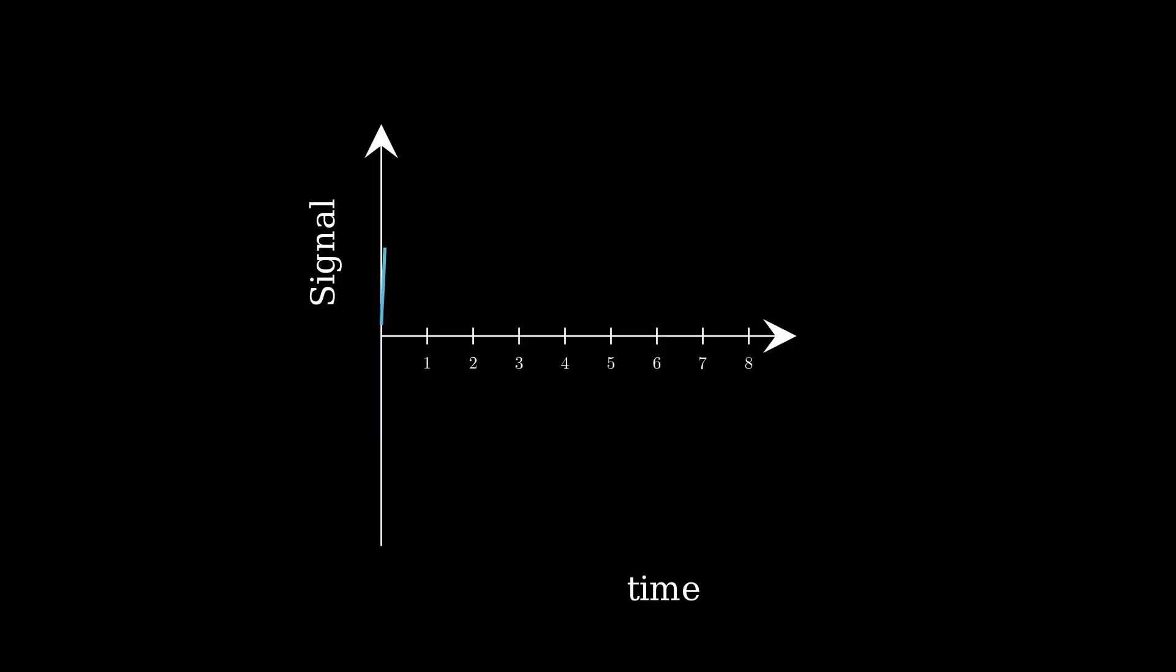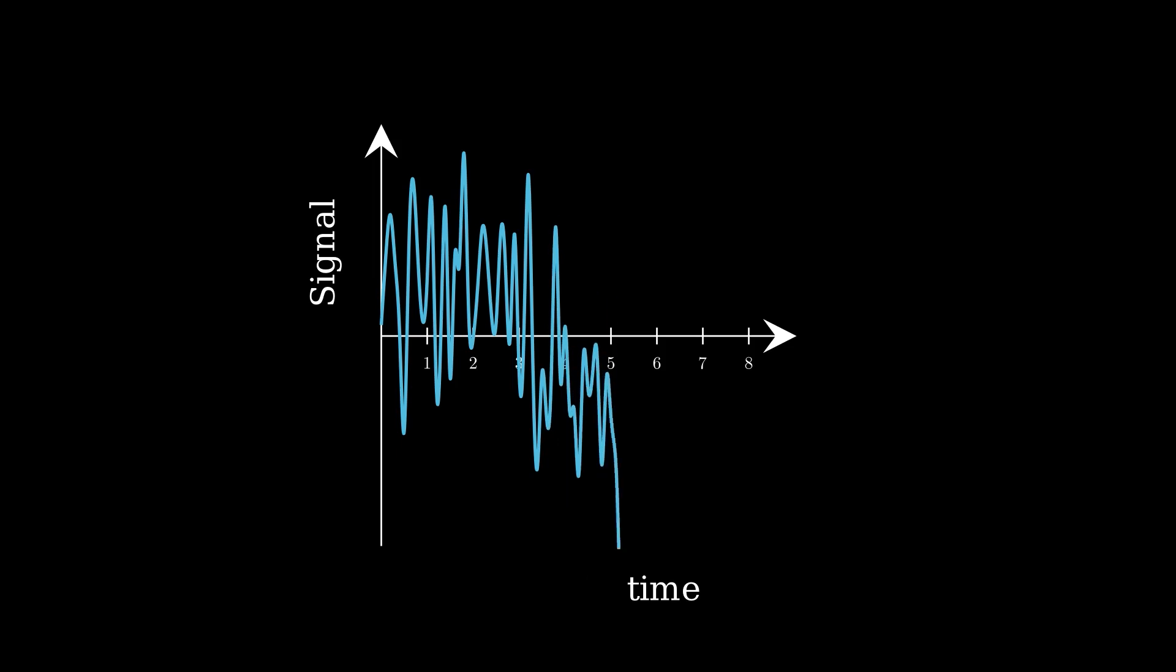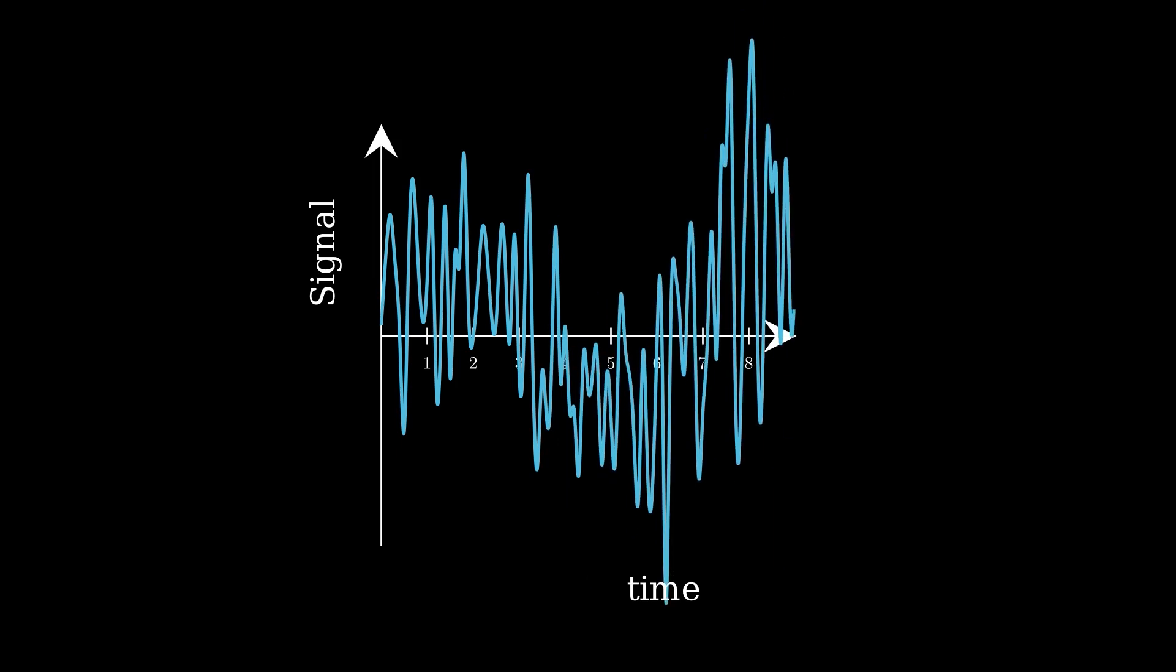This means that the data that we do get is noisy. In fact, with data this noisy, conventional fitting methods won't work to extract our signal. Okay, so then how do we find our merger?